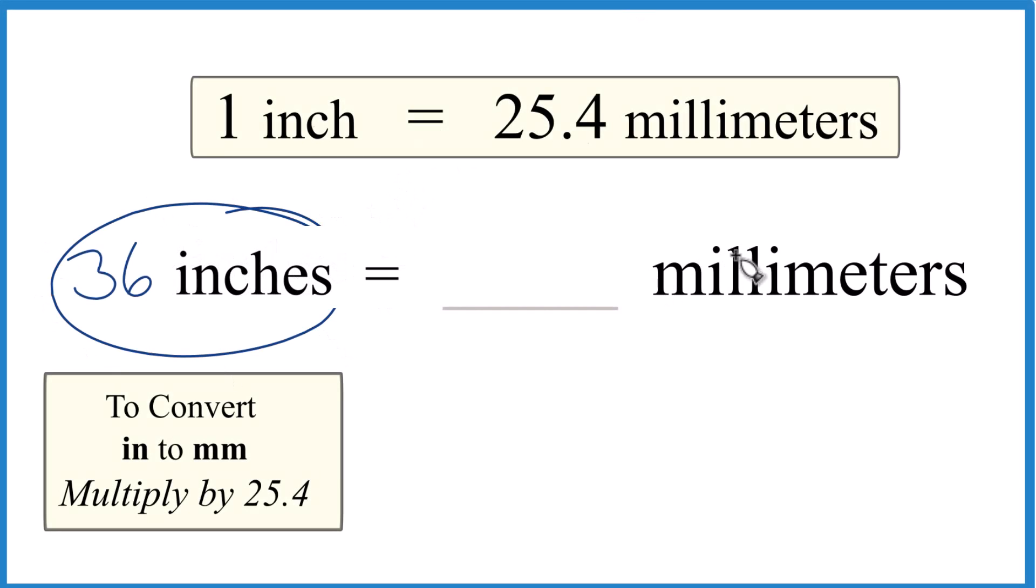Let's convert 36 inches to millimeters. Here's how we can do that. We know that one inch is 25.4 millimeters. It's kind of our conversion factor.